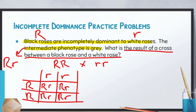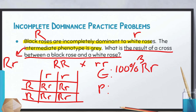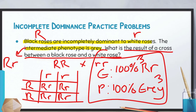Looking at genotype and phenotype: we have three possible genotypes — homozygous dominant, heterozygous, or homozygous recessive. In this case, 100% of our offspring are heterozygous, big R little r. For phenotype, one key difference between incomplete dominance and Mendelian genetics is that we have three possible phenotypes: black, white, or gray. Because all offspring are heterozygous, 100% will be gray. The steps are still the same — the only difference is that we now have an intermediate phenotype in between the dominant and recessive.